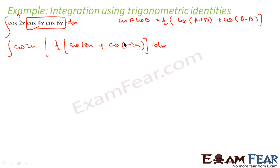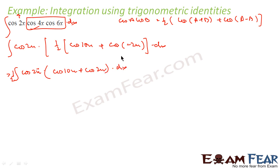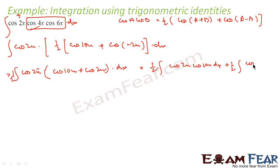Cos of minus 6x is always cos of x, so we can make it positive. This equals cos 2x times ½ times [cos 10x + cos 2x], because cos(-2x) = cos(2x). Now if you see, this is again a pair — there are two pairs. This is nothing but ½·cos(2x)·cos(10x) dx plus ½·cos(2x)·cos(2x) dx.